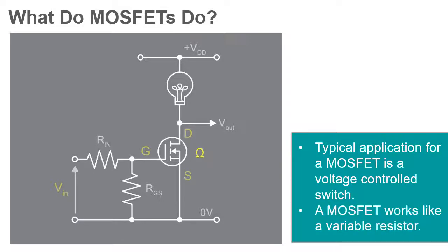A MOSFET can be thought of as a kind of variable resistor, where the gate-source voltage difference controls the drain-source resistance. Where there is no voltage difference between the gate and source, the drain-source resistance is very high and little to no current flows. When the gate-source voltage difference increases, the drain-source resistance is reduced and current will flow.